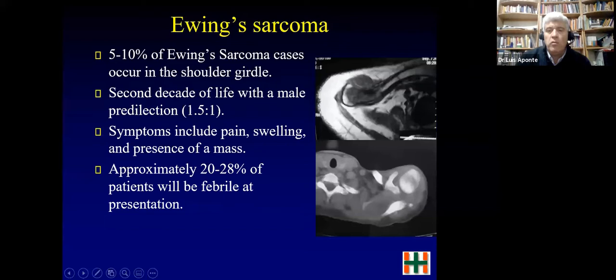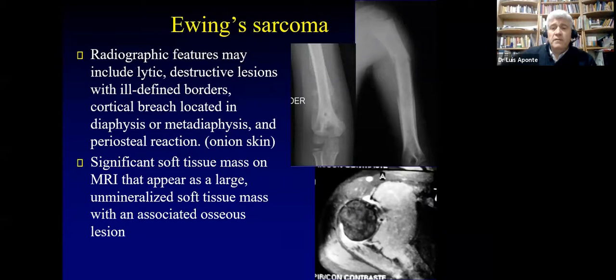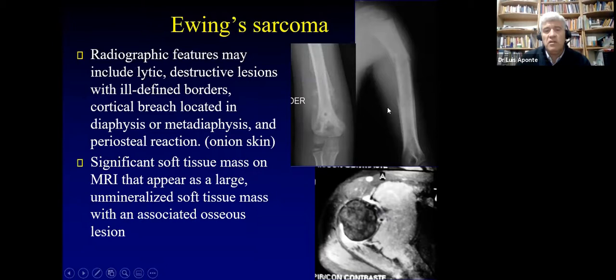The X-ray appearance is very similar to osteosarcoma, but one distinguishing feature is the onion-skin periosteal reaction, which is typical of Ewing sarcoma. You can have a large mass, as in this case of Ewing sarcoma of the scapula. Ewing sarcoma tends to expand more into soft tissue than osteosarcoma.